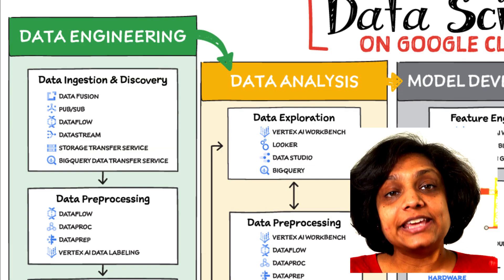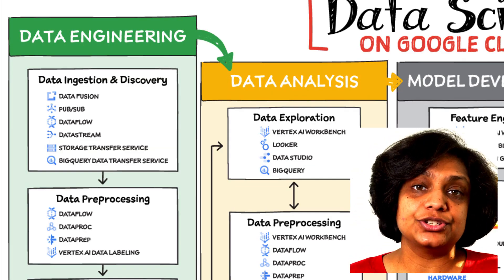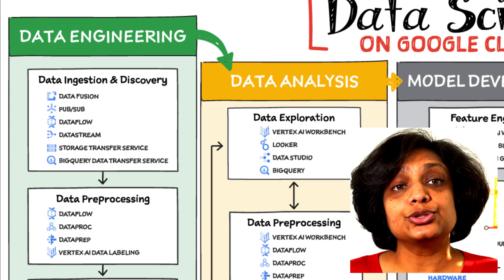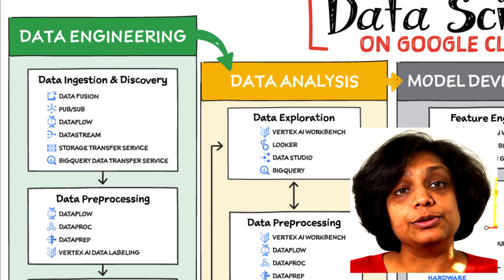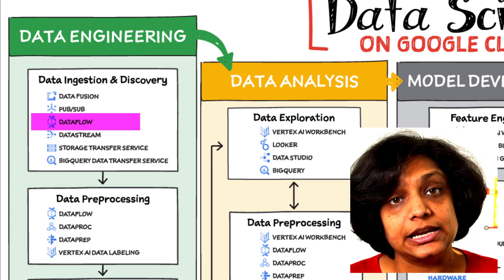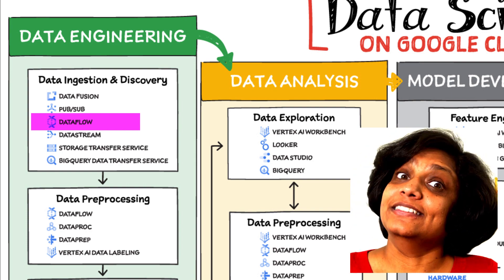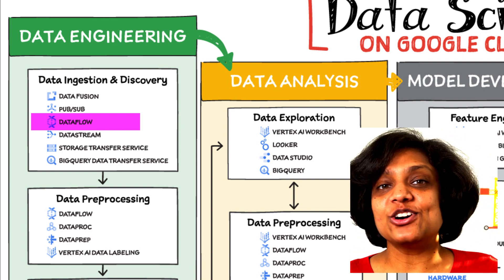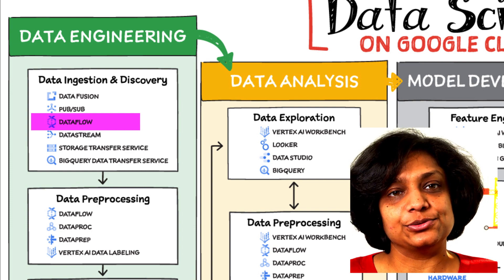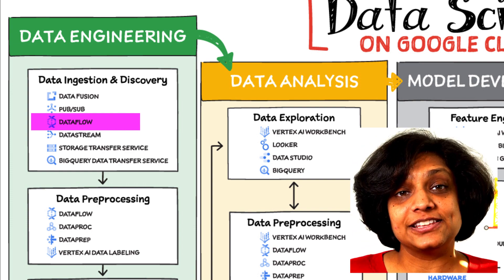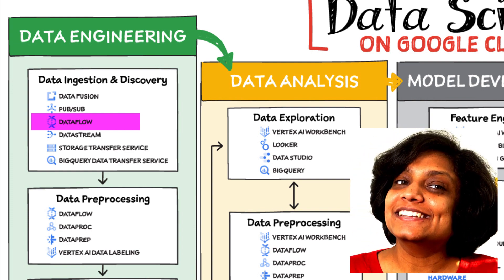Global scalability, high throughput, real-time access, and robustness are some common challenges at this stage. For scalable real-time and batch data processing, look into building data ingestion and preprocessing pipelines with Dataflow, a managed Apache Beam service. There's a reason why Dataflow is called the backbone of analytics on Google Cloud — we've done a video on this before, and I will link that in the description.